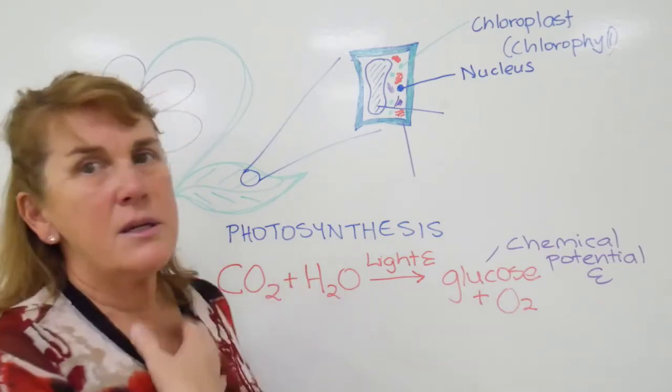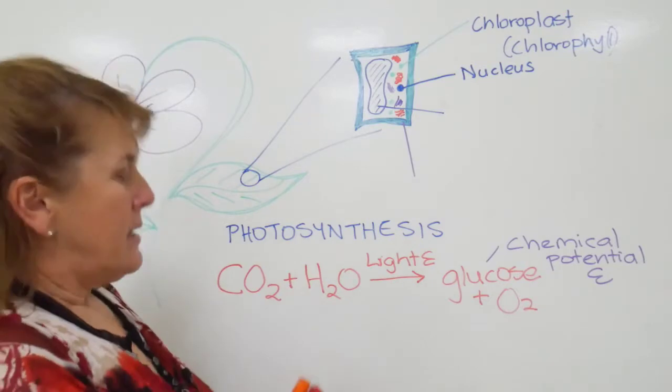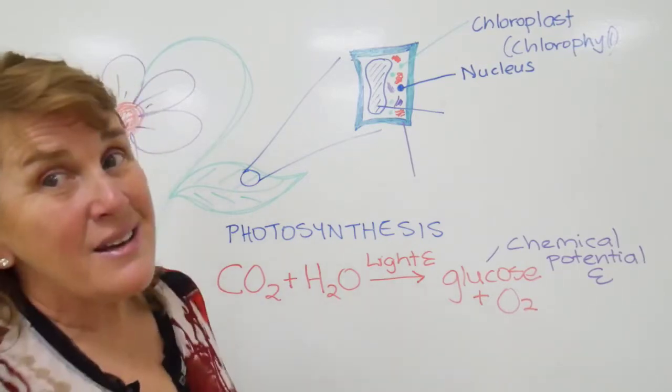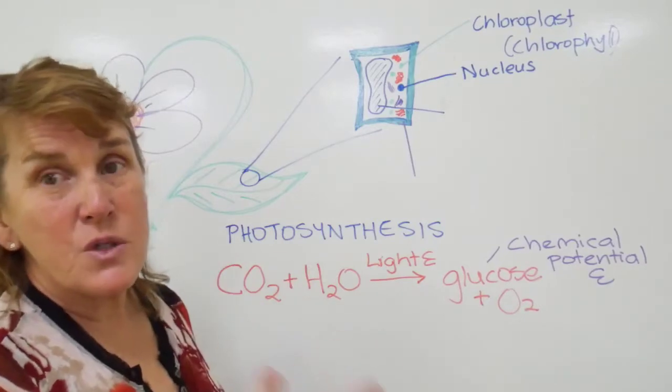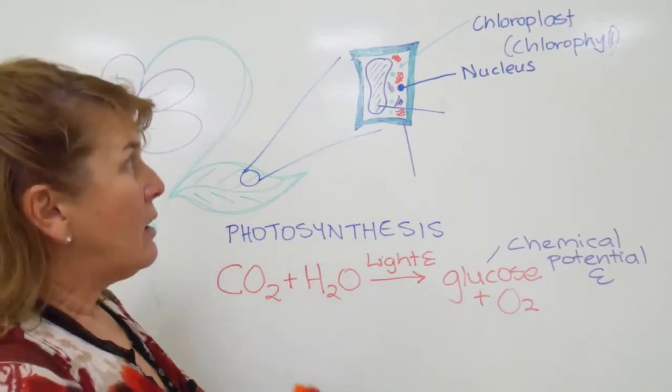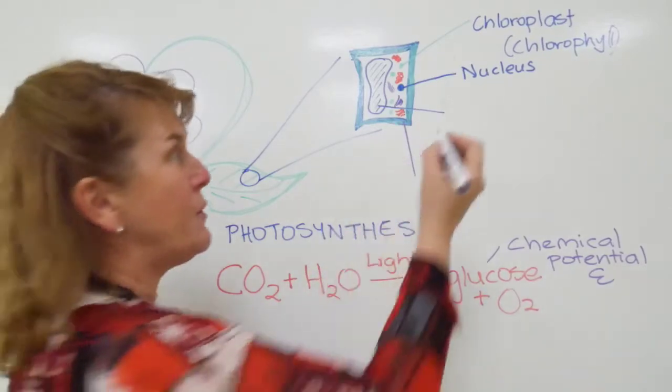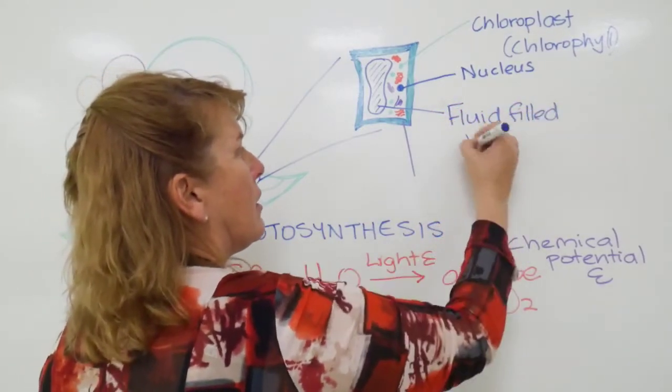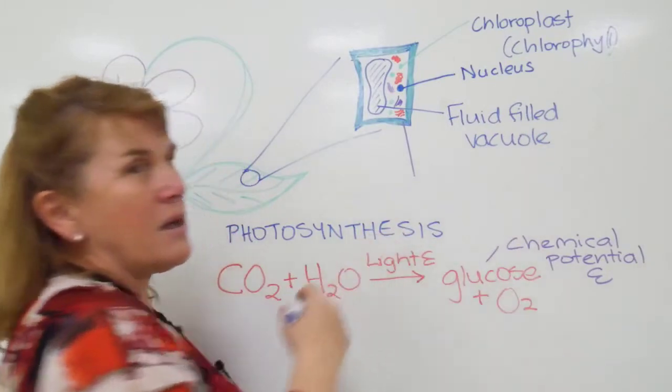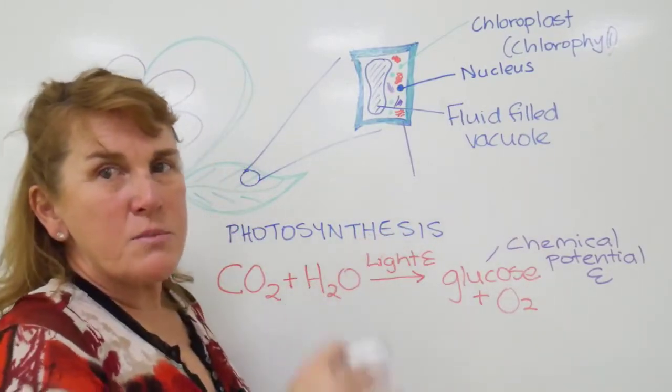The other things that are characteristics of plant cells that animal cells don't have: a large fluid-filled vacuole. You can have vacuoles in animal cells but they're not large, not as large as these ones.